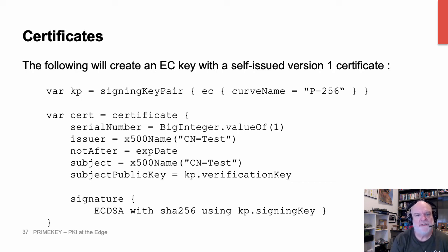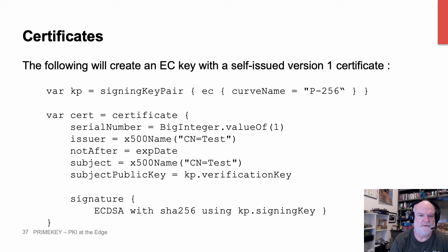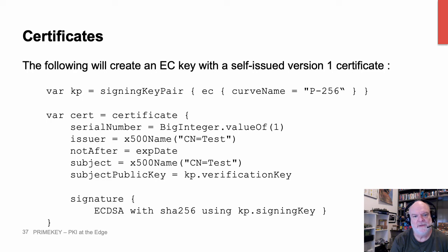Here's an example for generating a certificate. We've got another signing key pair built here, with our parameter type passed in a declarative sense — in this case we're creating an elliptic curve key pair for the curve P256. The certificate generation looks very much like the PKCS10 certification request did before: you just assign the fields to what you want and off it goes. The signature declaration includes ECDSA with SHA-256, done in that declarative style where there are actual Kotlin objects that determine what algorithm is used.